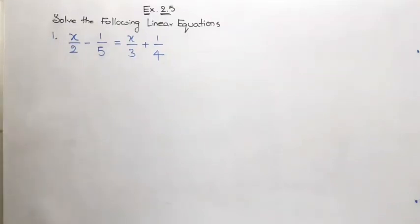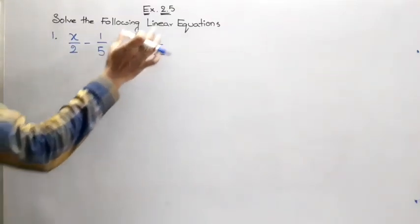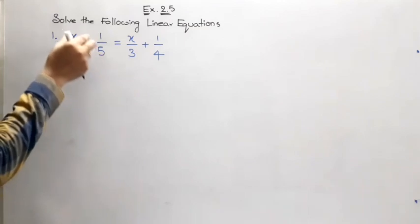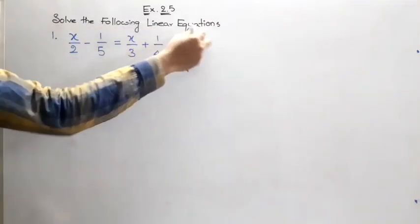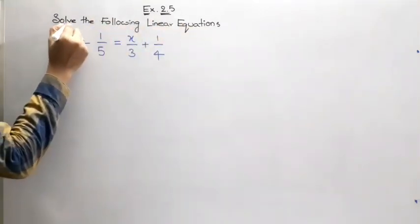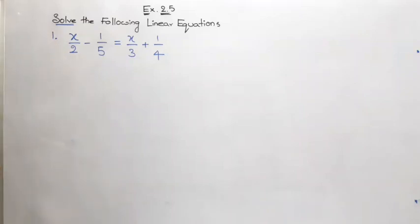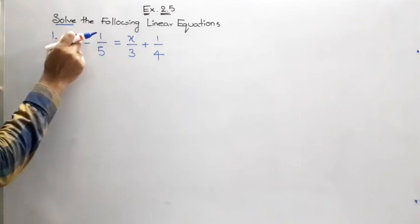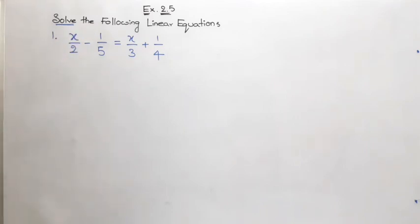Very good morning children. Today we are going to start our exercise 2.5. Starting with the first problem, solve the following linear equation. As I am saying from the beginning of this session, solve indirectly indicates we have to find the value of unknown variable.